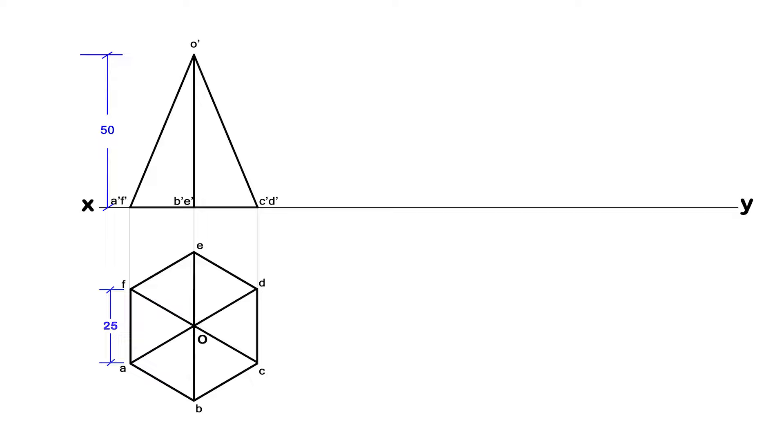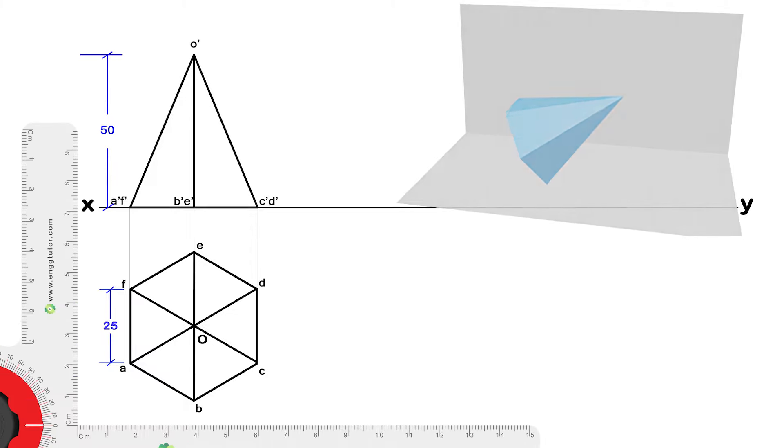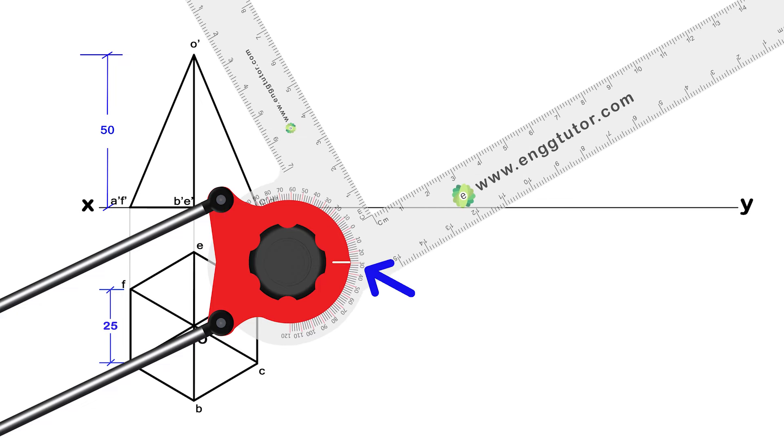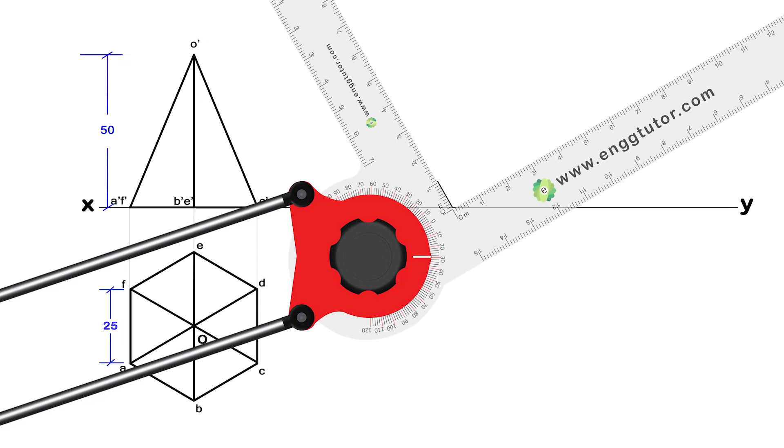Now for the second stage, we have to push the pyramid such that the axis becomes 30 degrees to the horizontal plane. So to draw the required front view, rotate the drafter 30 degrees upwards and from reference line draw a line of any length from smaller scale.